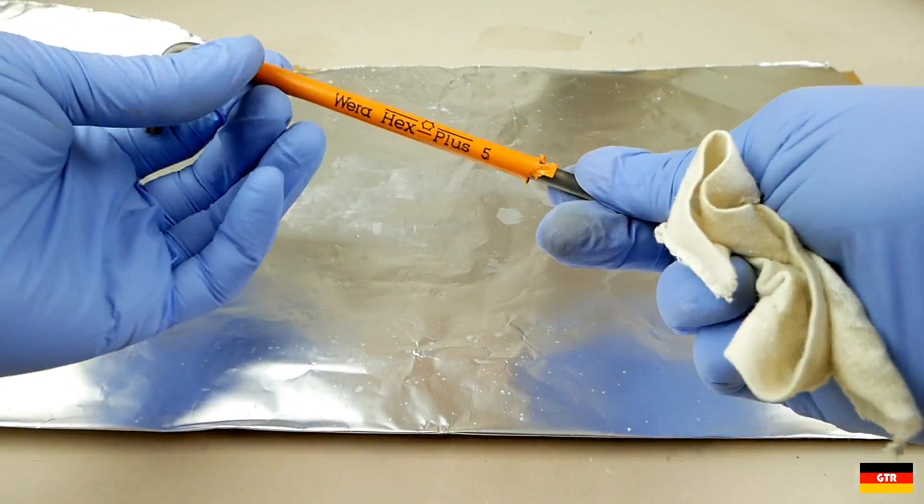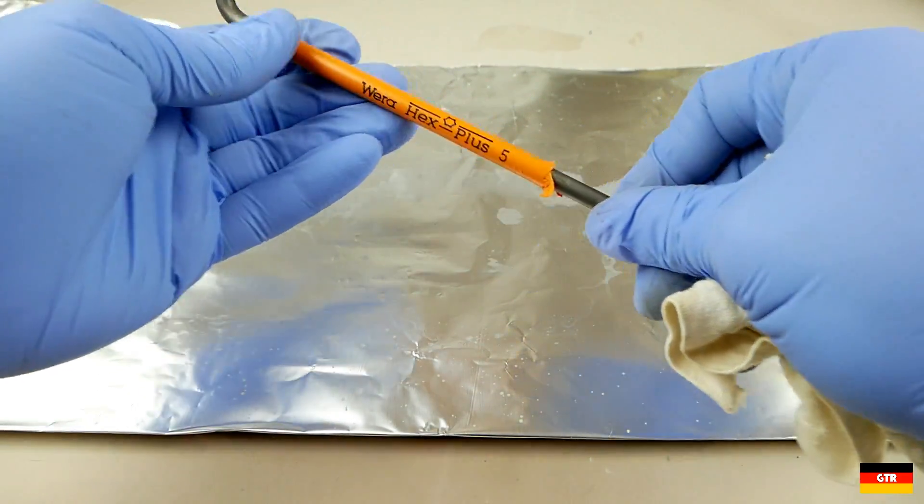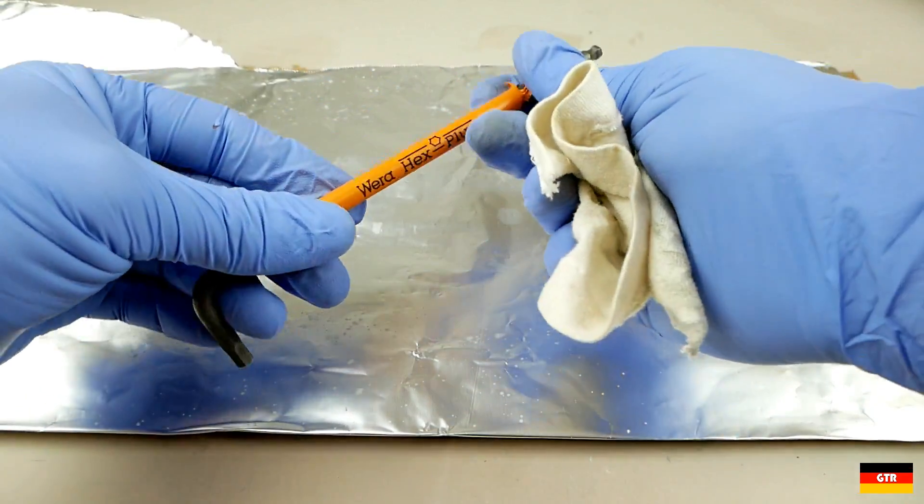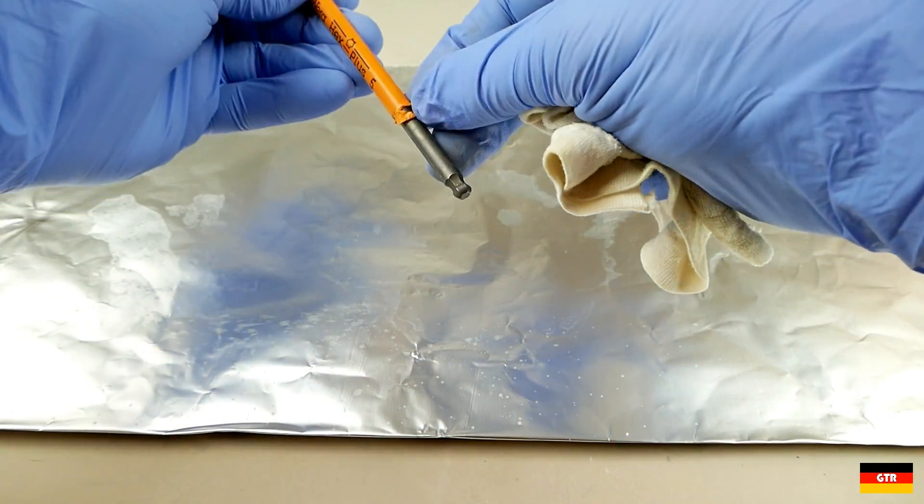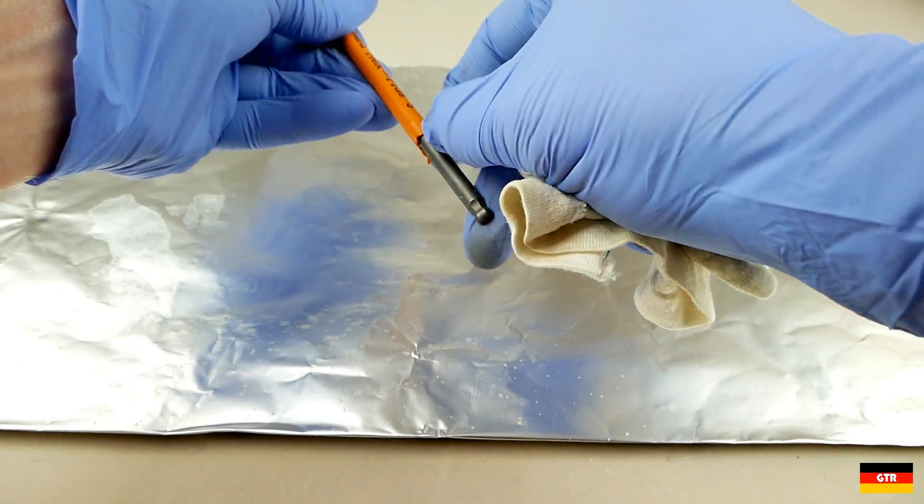Alright well the oven cleaner didn't do nothing on this either. So oven cleaner I think will actually dissolve bone. And it didn't do anything to this.